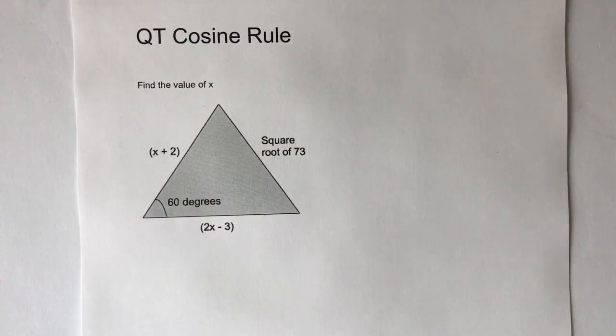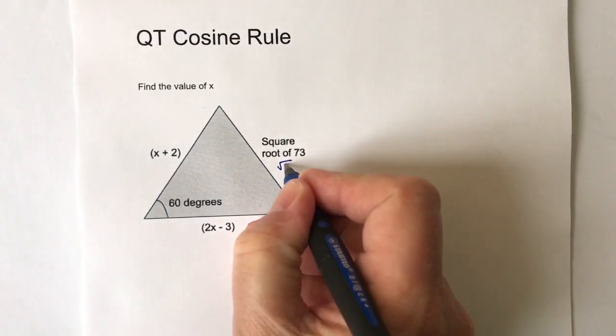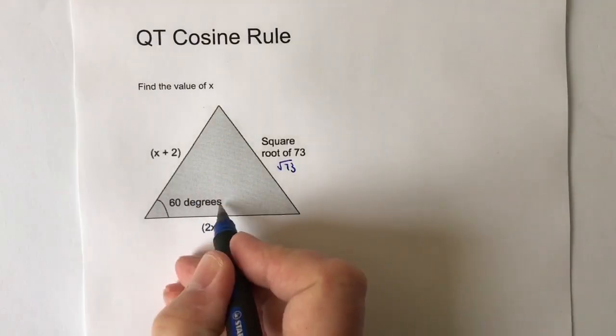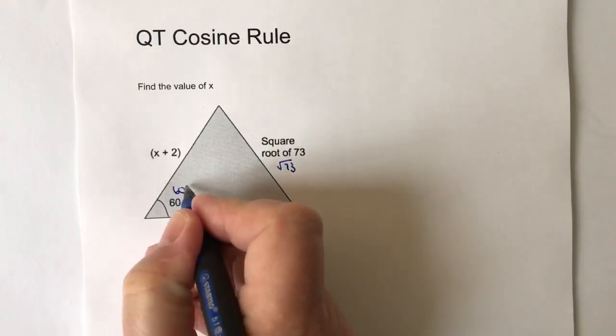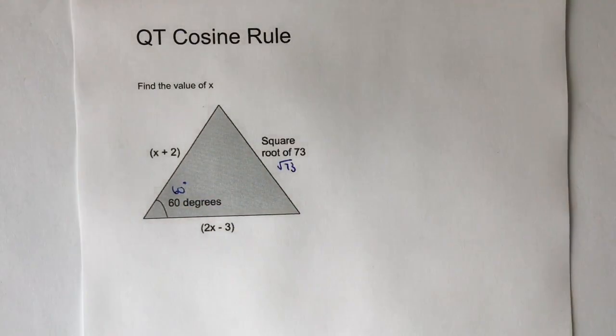Now just a couple of notes before we start. First thing is that you wouldn't necessarily get the text square root of 73, you would probably get the square root sign 73, and you wouldn't get 60 degrees written like this. This is just how I wrote down this particular question. The second thing you need to be aware of is you need to know that it's a cosine question.